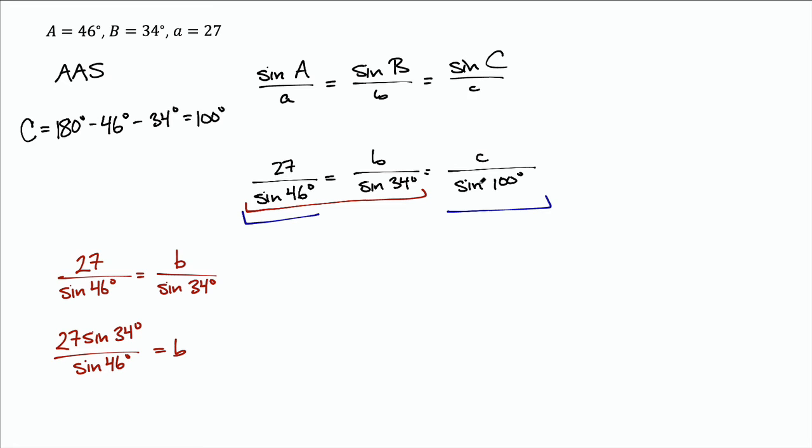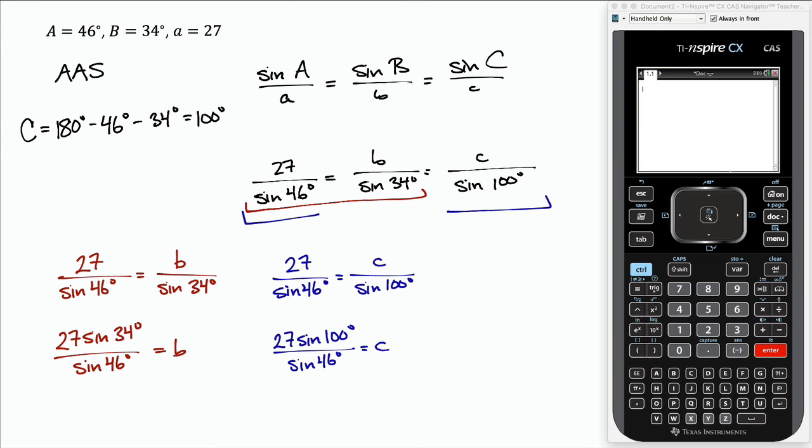I'm going to go ahead and do the other one before plugging these into the calculator. For this second equality here, if I multiply both sides by the sine of 100, let me go ahead and write it out: 27 over sine of 46 degrees equals c over sine of 100 degrees, so c equals 27 sine of 100 degrees over sine of 46 degrees.